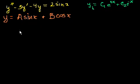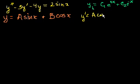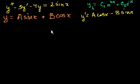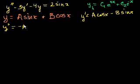Let's figure out the first and second derivatives. The first derivative y' = a*cos(x) minus b*sin(x), since the derivative of cosine is minus sine. Then the second derivative y'' = minus a*sin(x) minus b*cos(x).